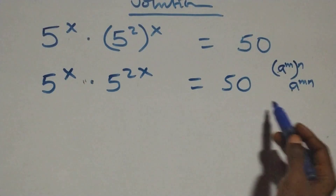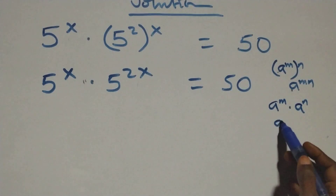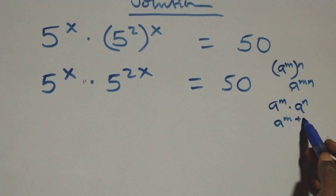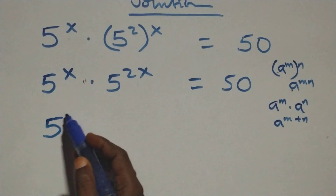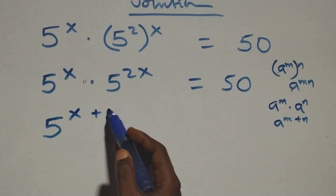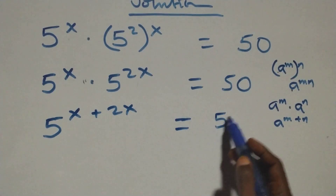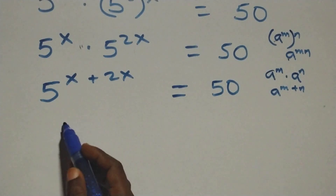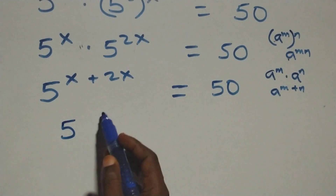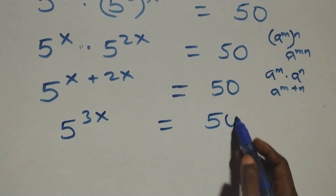This also follows the law of indices: when we have a raised to the power m times a raised to the power n, this is a raised to the power m plus n. So we have 5 raised to the power x plus 2x, which simplifies to 3x, equals 50.